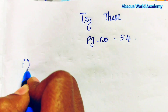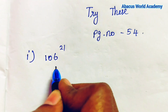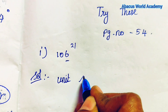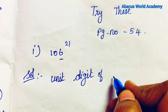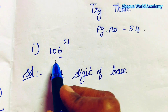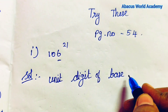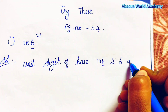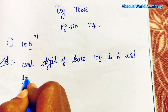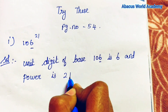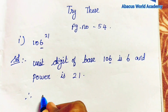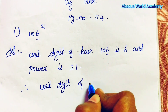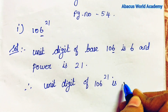Okay, so first one: 106 to the power 21, so unit digit is 6. Solution: unit digit of base. Base 106 — the unit digit of base 106 is 6. Power is 21. Therefore, unit digit of 106 to the power 21 is 6.